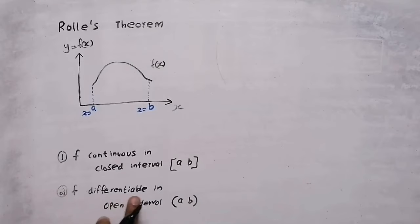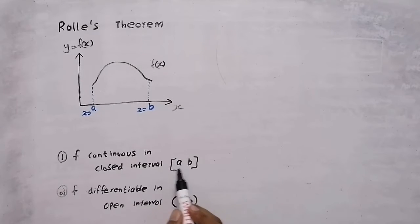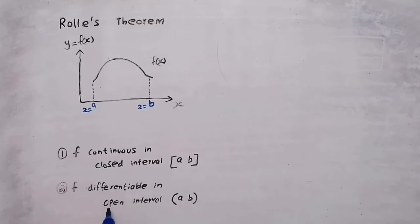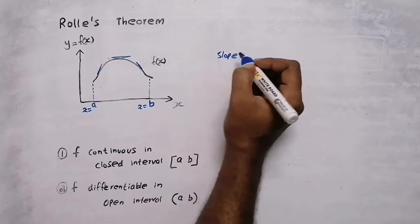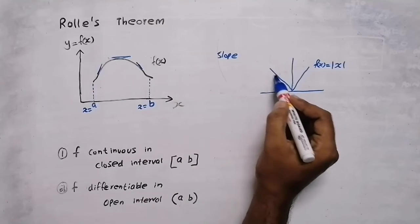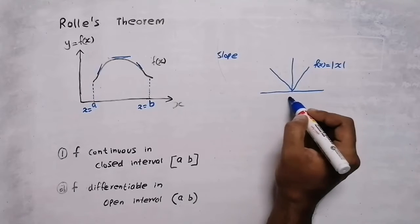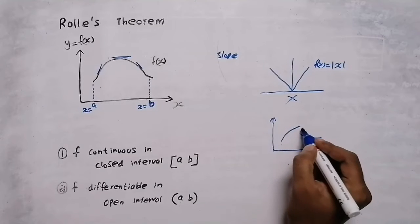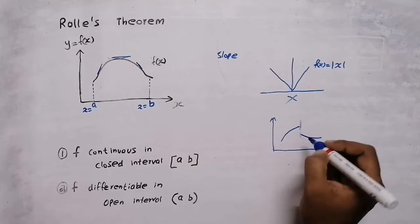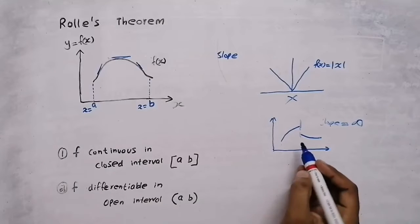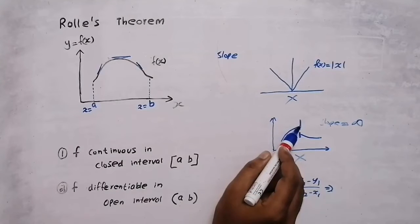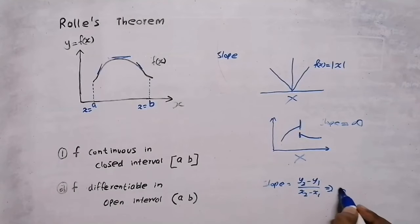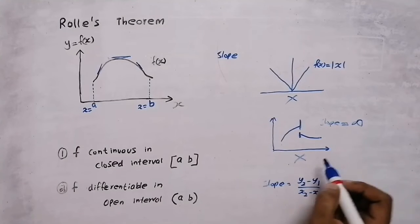The second condition: the function should be differentiable in open interval (a, b). For open interval we use parentheses or round brackets; for closed interval we use square brackets. To identify whether the function is differentiable — if we are able to find the slope, then that function will be differentiable. For example, f(x) = |x| is not differentiable at x = 0 because there is no slope there. Similarly, if a function has a vertical slope, the slope will be infinity, since anything divided by 0 is infinity — so that function is also not differentiable.